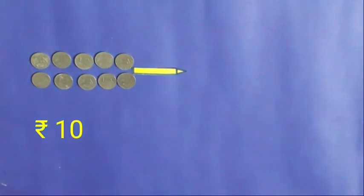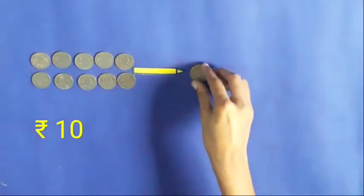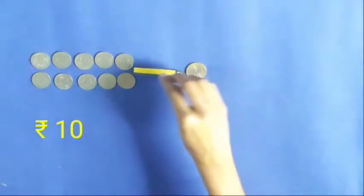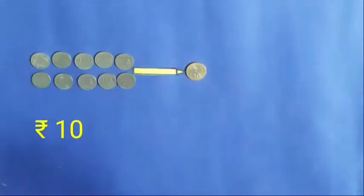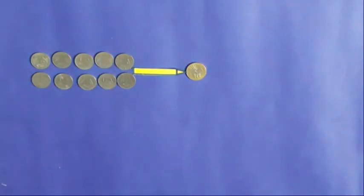The value of 10 coins of 1 rupee is equal to the value of 1 coin of 10 rupees.